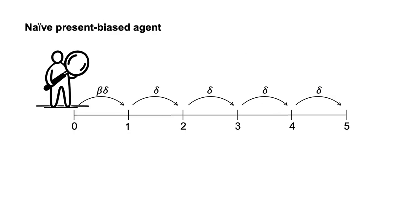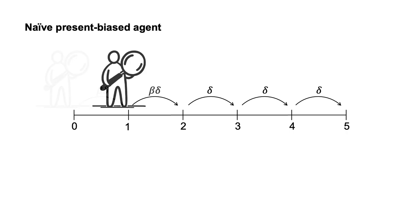The naive agent makes their plans by forward reasoning, starting from today. First, they decide their preferred option for today, period zero, believing that they will stick to their plan once they move to the next period. When they move to the next period, they recompute their plan, again believing they will stick to the plan in the future.